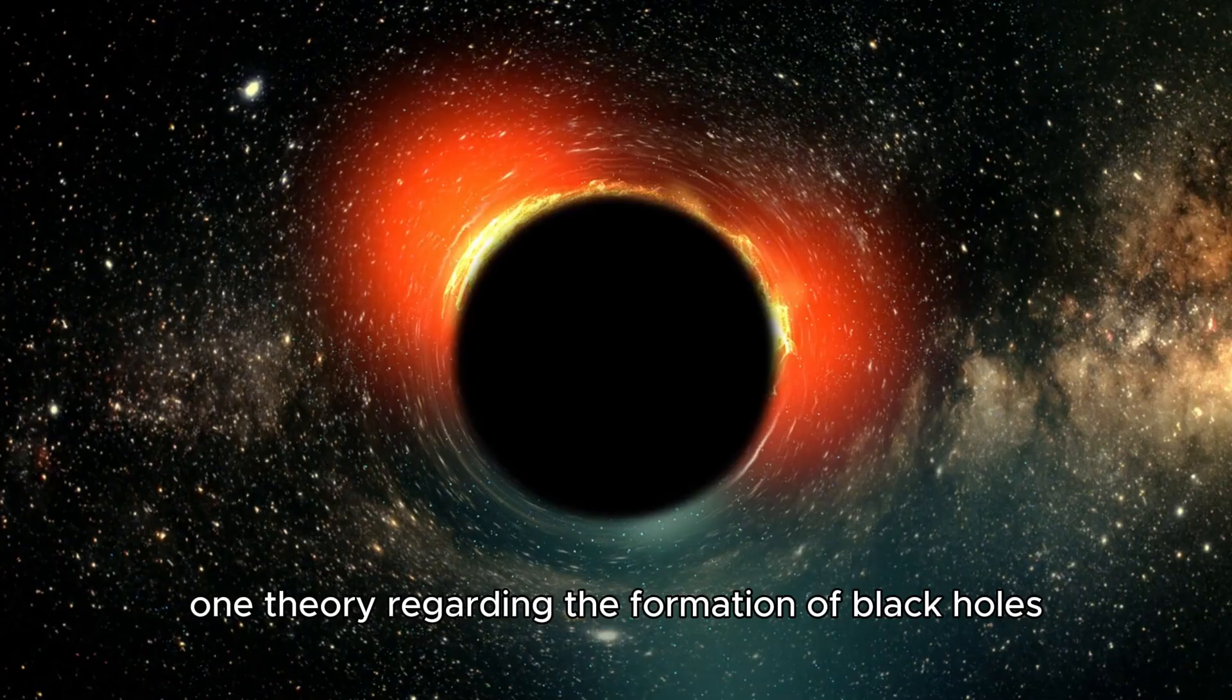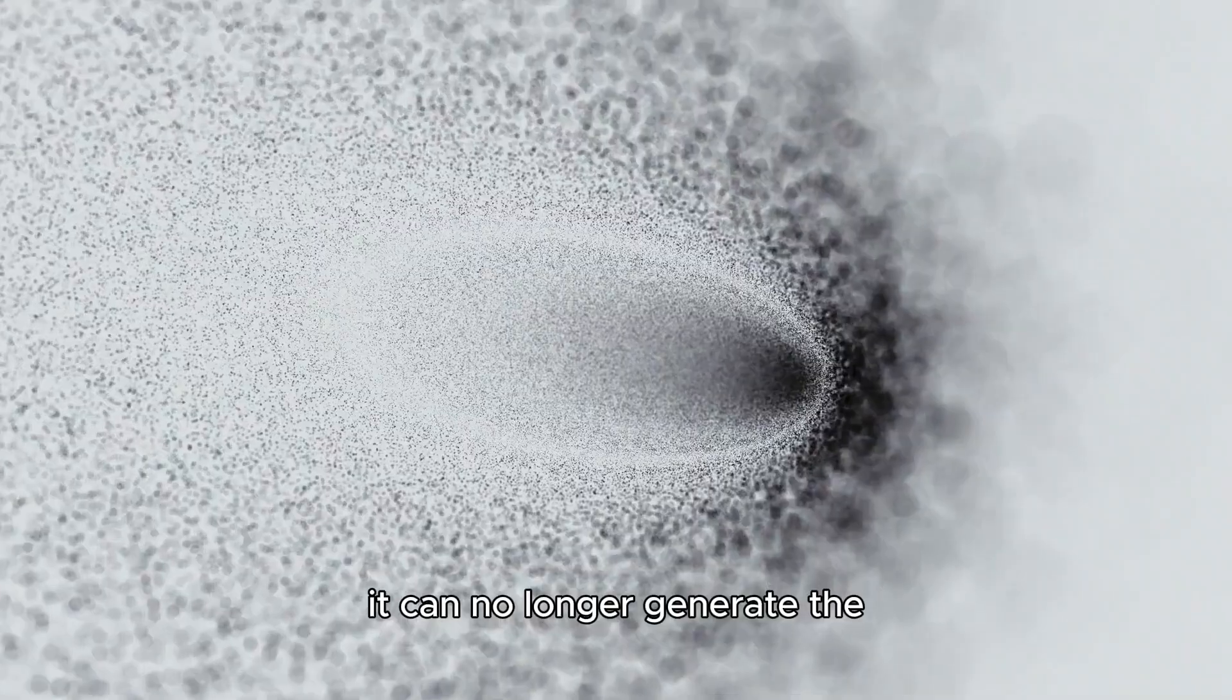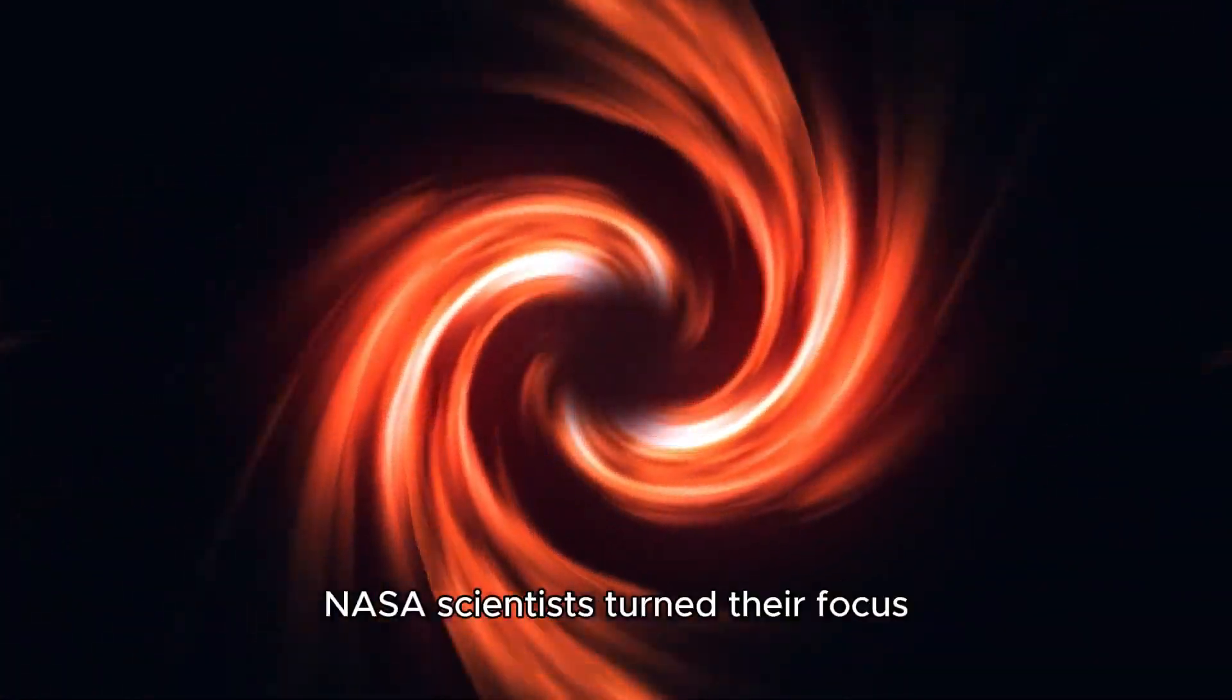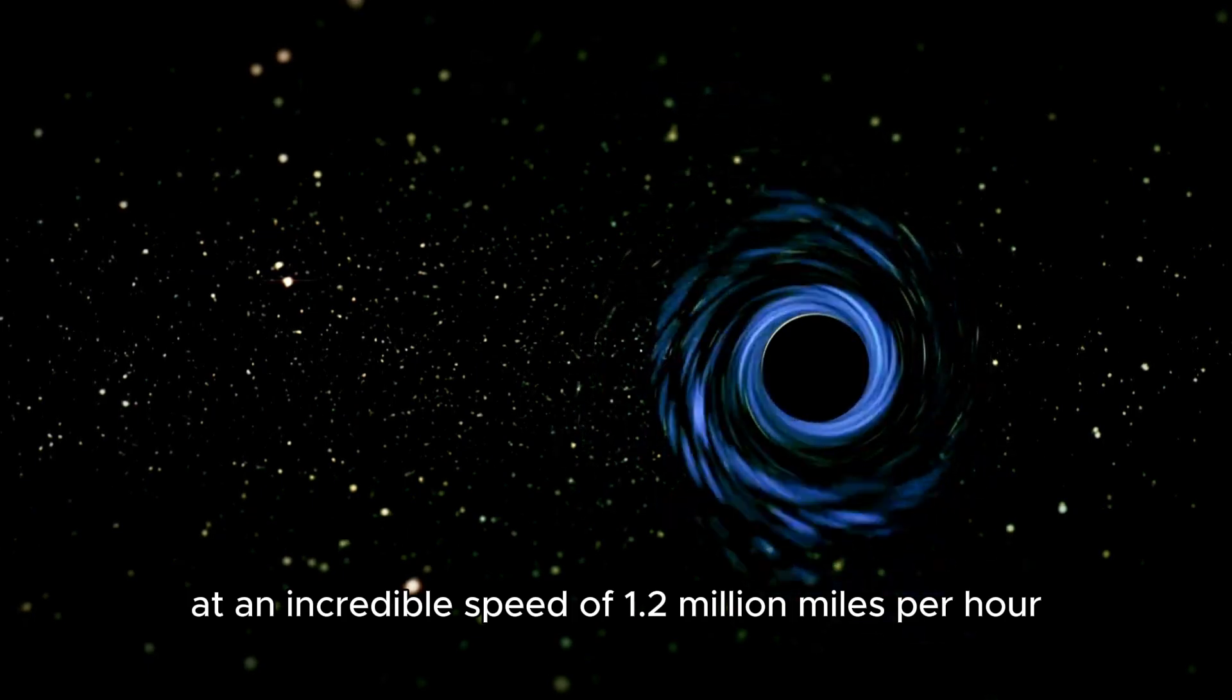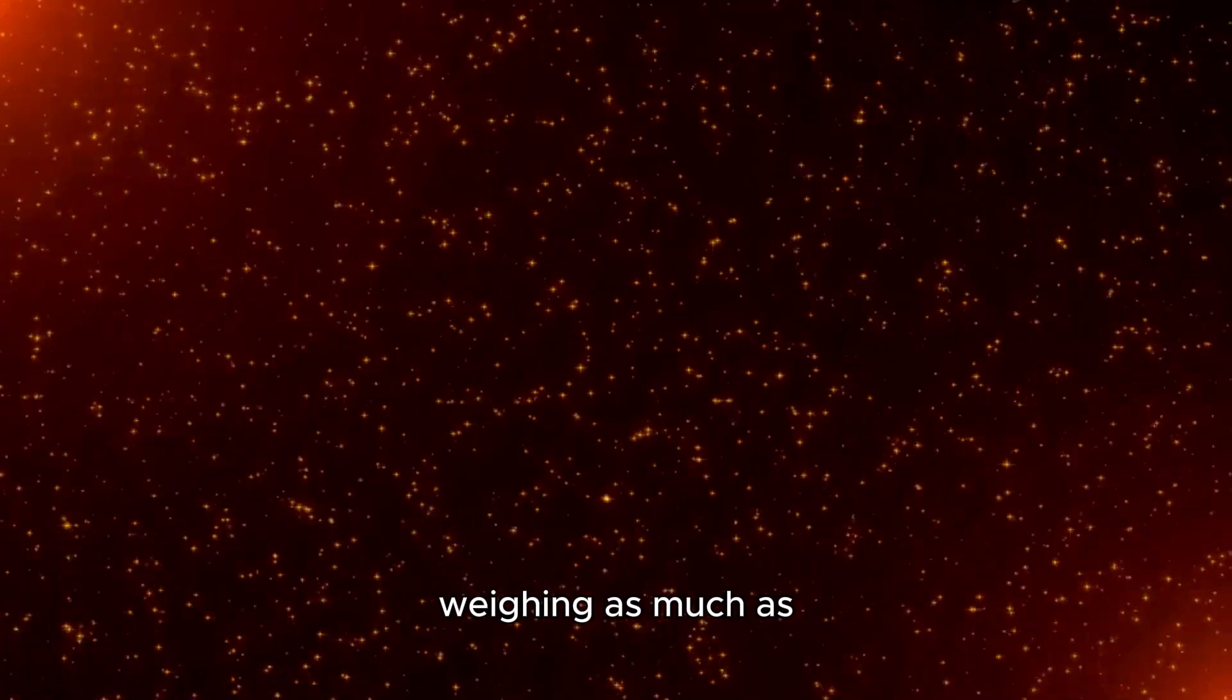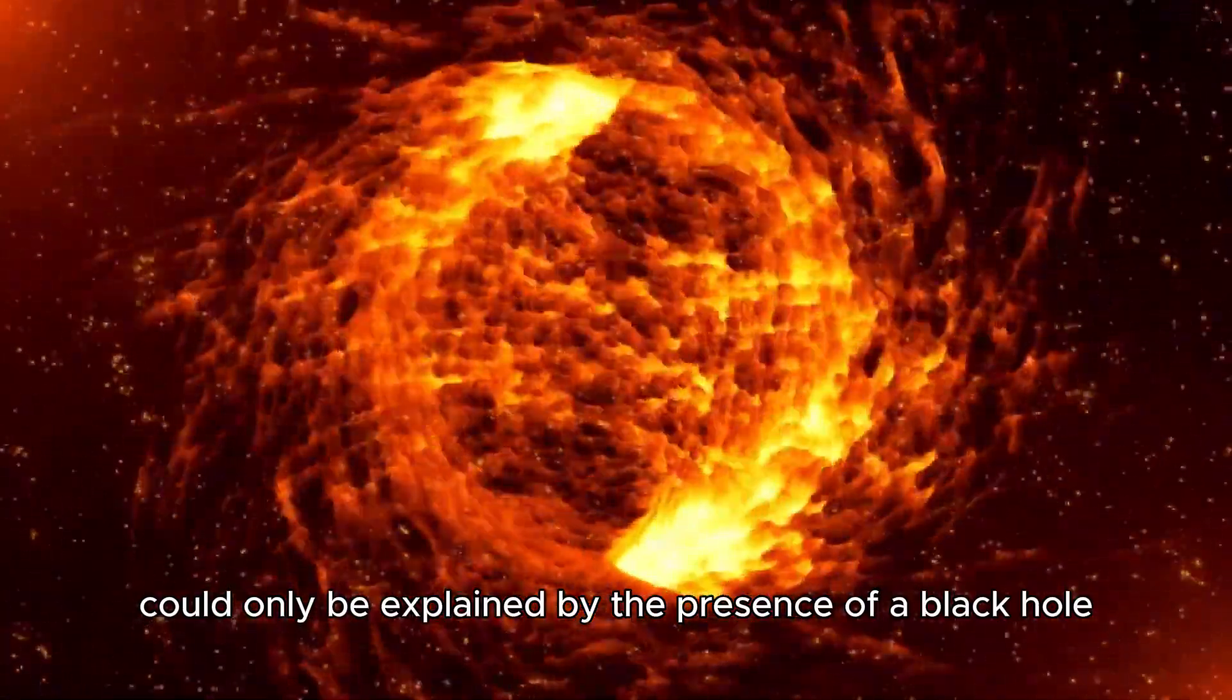One theory regarding the formation of black holes is that they are the result of collapsing stars. When a star burns through all of its fuel, it can no longer generate the energy needed to counteract gravity, leading to a collapse inward, which can ultimately create a singularity. In order to further investigate the nature of black holes, NASA scientists turned their focus to the core of the M87 galaxy. Here, astronomers observed a massive whirlpool of superheated hydrogen gas spinning at an incredible speed of 1.2 million miles per hour. The sheer force of this spinning gas should have caused it to fly apart, yet it remained intact. Scientists hypothesized that a colossal mass at the center of the galaxy, weighing as much as two to three billion times the mass of the sun, was holding it together.